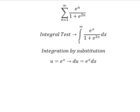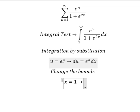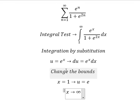Next, we need to change the bounds. When x equals 1, we substitute to get u equals e. When x approaches positive infinity, this goes to positive infinity, so u will also go to positive infinity.